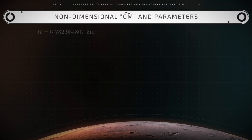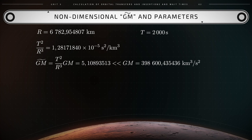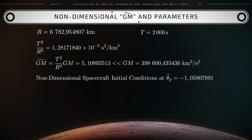With R equal to 6,782,954 kilometers and a reference time capital T equal to 2,000 seconds, the expression for the non-dimensional GM-tilde yields 5.1089 units. This derives from the product of capital T squared over capital R cubed times the dimensional GM. This result of 5.1089 is significantly smaller than the dimensional GM, which equals 3.986 times 10 to the fifth kilometers cubed per second squared.